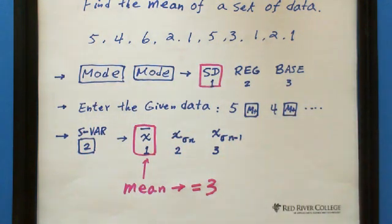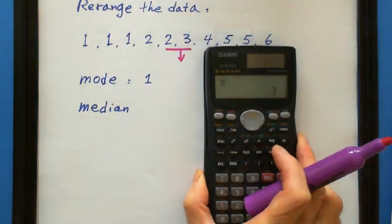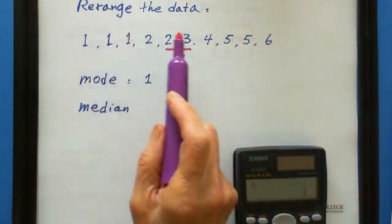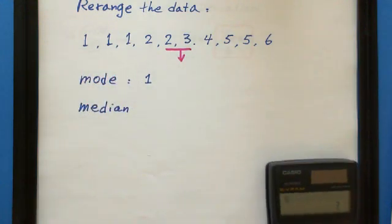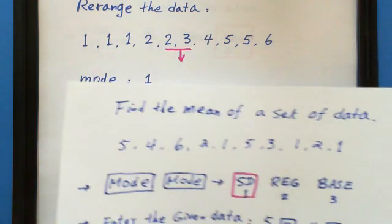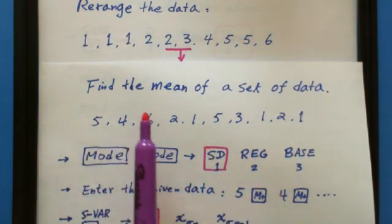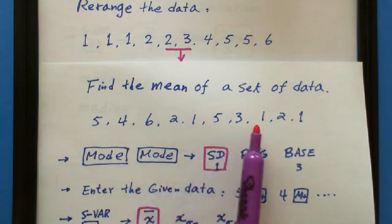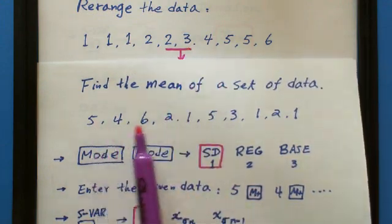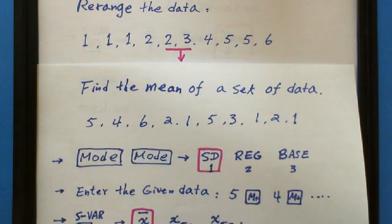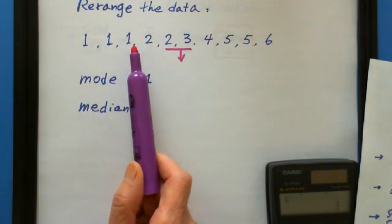Next, by the way I'll show you how to find the mode of this data, how to find the median of this data. This one we do manually. We rearrange the data from the smallest to greatest: 1, 1, 1, 2, 2, 3, 4, 5, 5, 6.